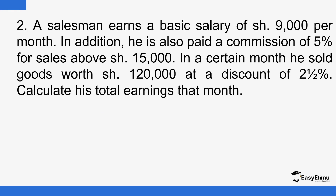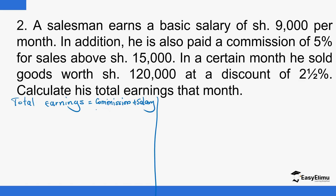There is a salesman who earns a basic salary of 9,000 shillings per month. In addition, he is paid a commission of 5% for sales above 15,000 shillings. In a certain month, he sold goods worth 120,000 shillings. Calculate his total earnings. Total earnings should be equal to commission plus the monthly salary, so we start by calculating commission.